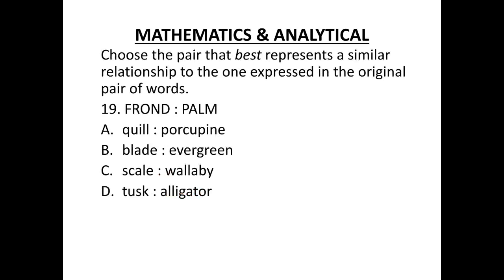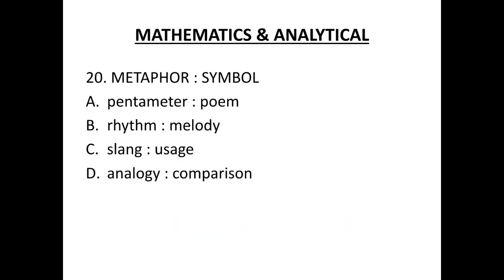Choose the pair that best represents a similar relationship to the one expressed in the original pair of words. Frond is to palm. The correct option is quill is to porcupine. Fronds are the leaf-like structures of palm tree. Whereas, porcupine is the rodent animal and it has those pike-like quills. Metaphor is to symbol. The correct option is D. Analogy is to comparison.